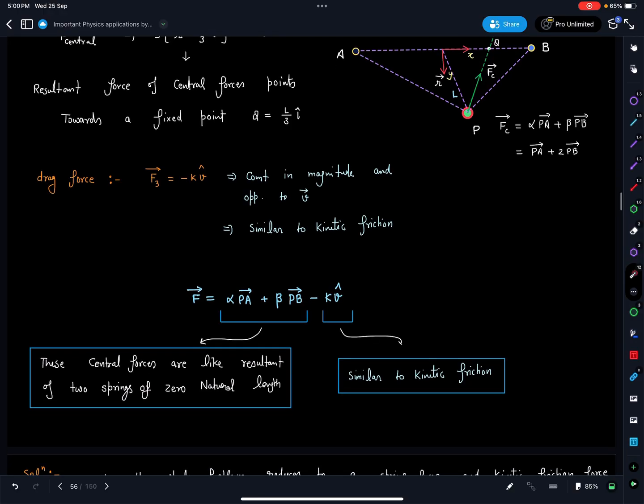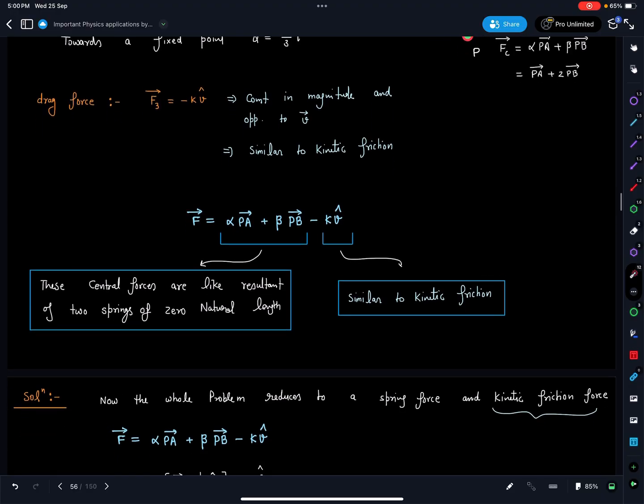So let's go ahead and deal further. The entire force now we can reduce in two parts: these central forces are like the resultant of two springs of zero natural length, and it is K V cap which is similar to kinetic friction. This is the concept part, and if you are able to observe this part clearly, then I think the problem becomes very easy. Let's start now, the solution starts from this point.